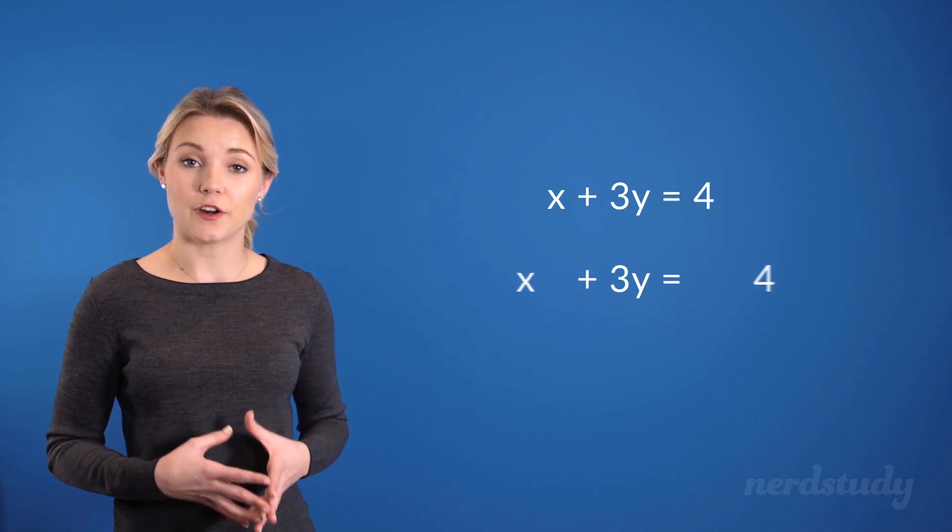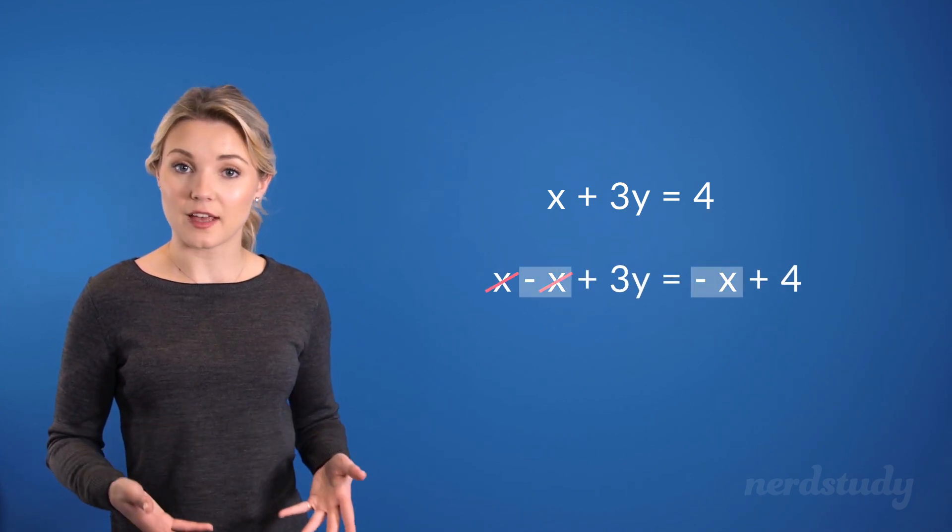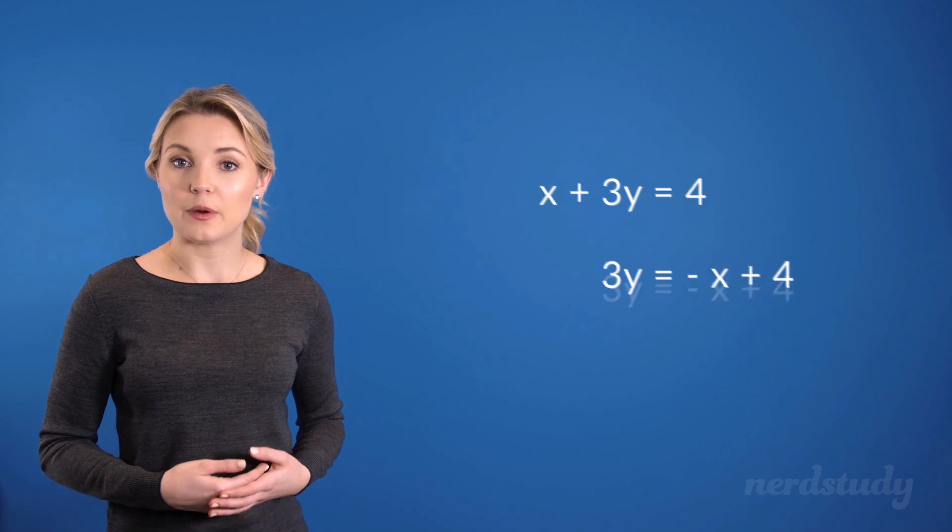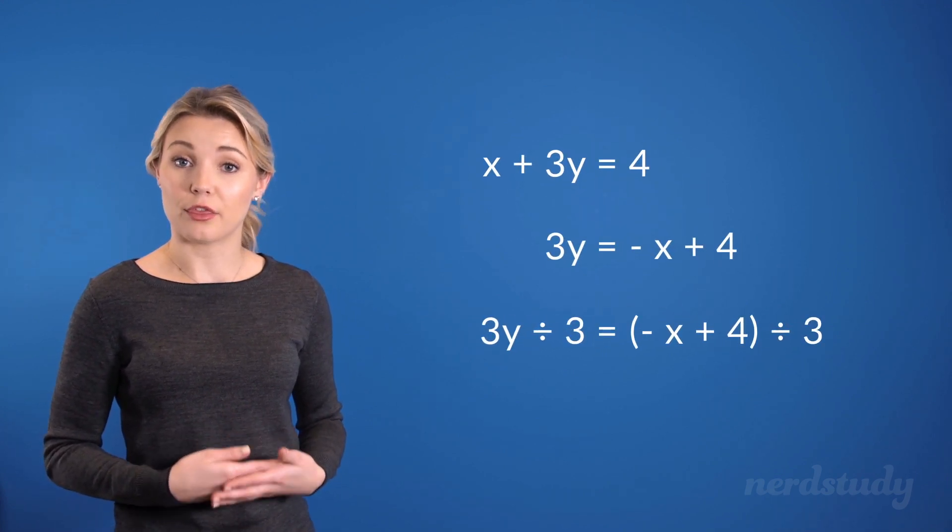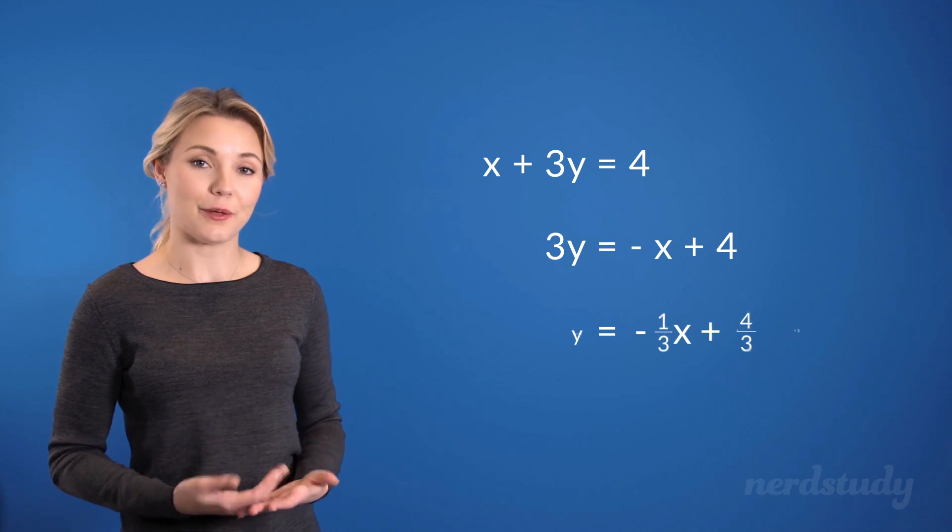What we need to do is first subtract x on both sides. Then, we need to divide both sides by 3. And what we get is the following.